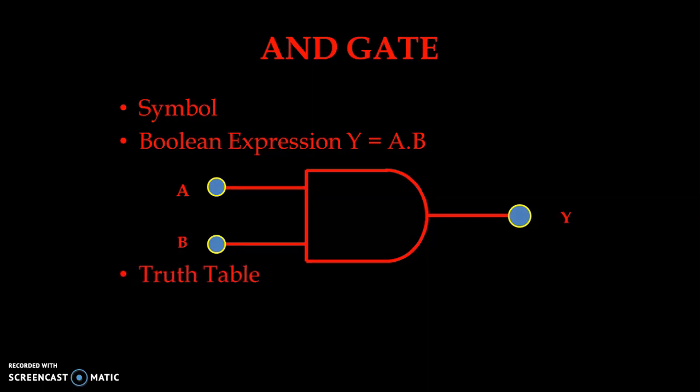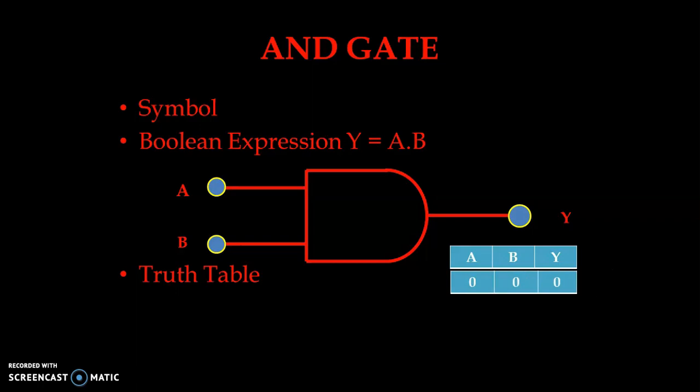Now let us see the truth table. In digital electronics, as we discussed earlier, we have only two possible conditions for input and output: either zero condition or one condition. Zero condition is known as low and one is known as high. We have input A, input B, and output Y. We will see each possible condition — since we have two inputs, 2 raised to 2 equals 4, so we have four possibilities.